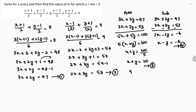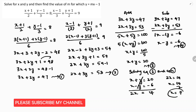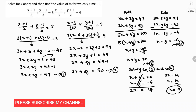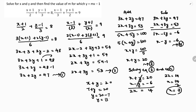Solving equations 3 and 4 using elimination: x plus y is 20, x minus y is minus 6. Adding them, the y terms cancel, giving 2x is 14, so x is 14 by 2, which is 7. Substituting x equals 7 into x plus y equals 20: 7 plus y is 20, so y is 20 minus 7, giving y equals 13.